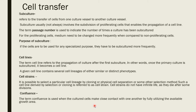Cell line refers to the propagation of culture after the first subculture. In other words, once the primary culture is subcultured, it becomes a cell line. A given cell line contains several cell lineages of either similar or distinct phenotypes.